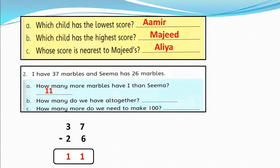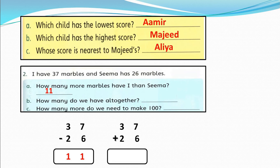Next question: How many do we have altogether? Let's add: I have 37 marbles and Sima has 26. 7 plus 6 equals 13 — so we write 3 in the 1s column and carry 1 into the 10s. Now add: 1 plus 3 equals 4, and 4 plus 2 equals 6. So we have 63 marbles altogether. The next question: How many more do we need to make 100? We need 37 more marbles to make 100.